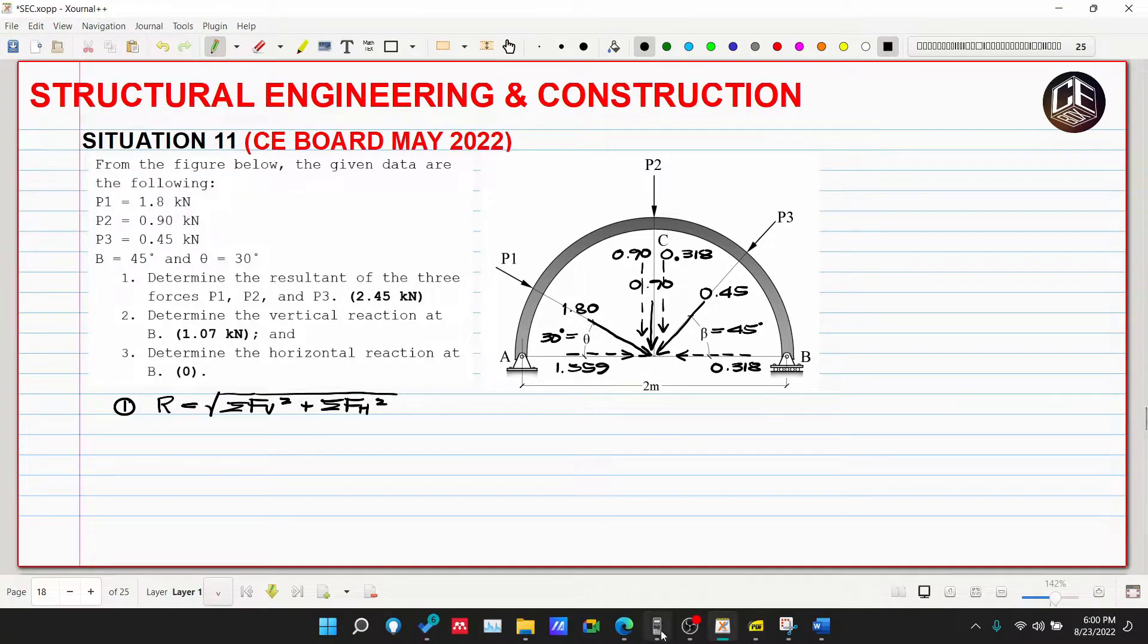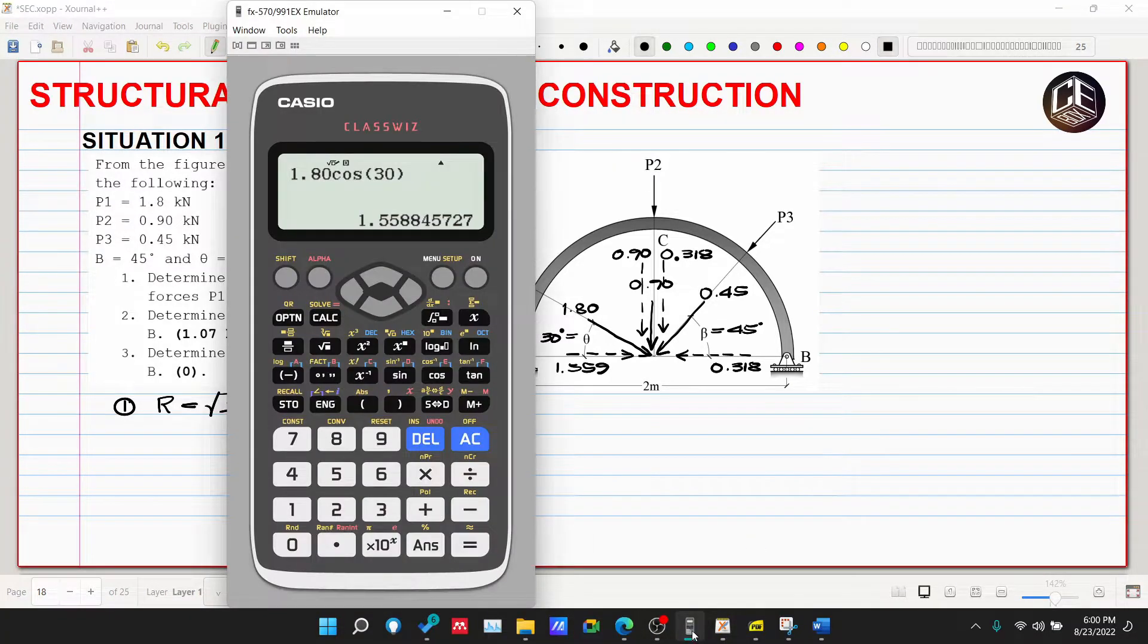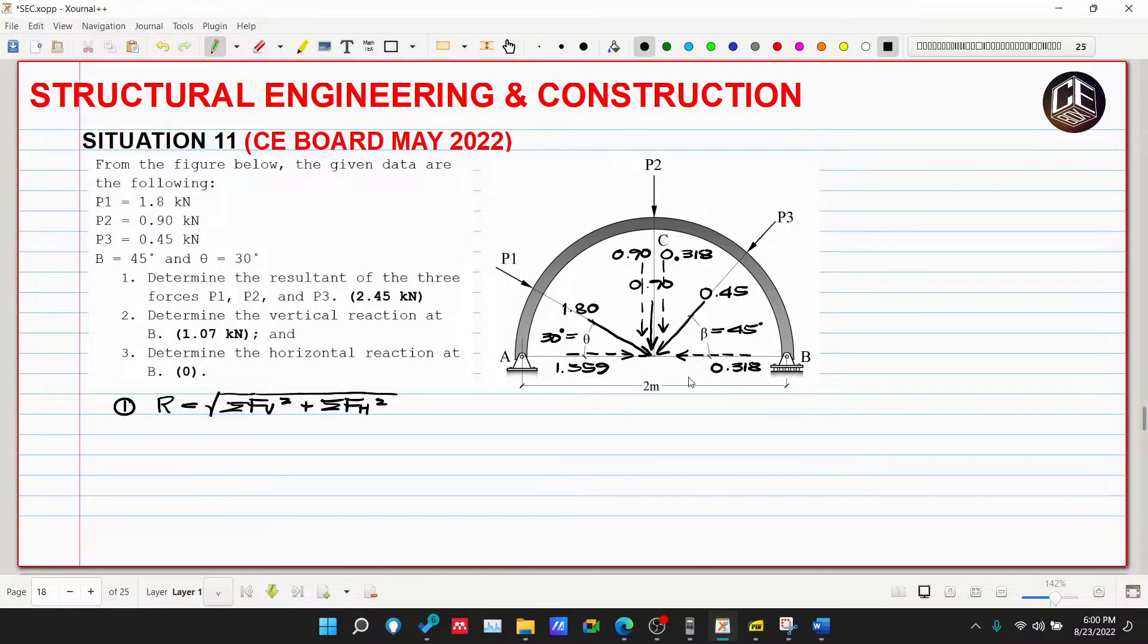So check natin, 1.559, okay. So ma-solve na natin yung ating summation of forces vertical and horizontal. Assume natin lahat ng upward ay positive for vertical, then for horizontal summation of forces horizontal, lahat ng to the right is positive.